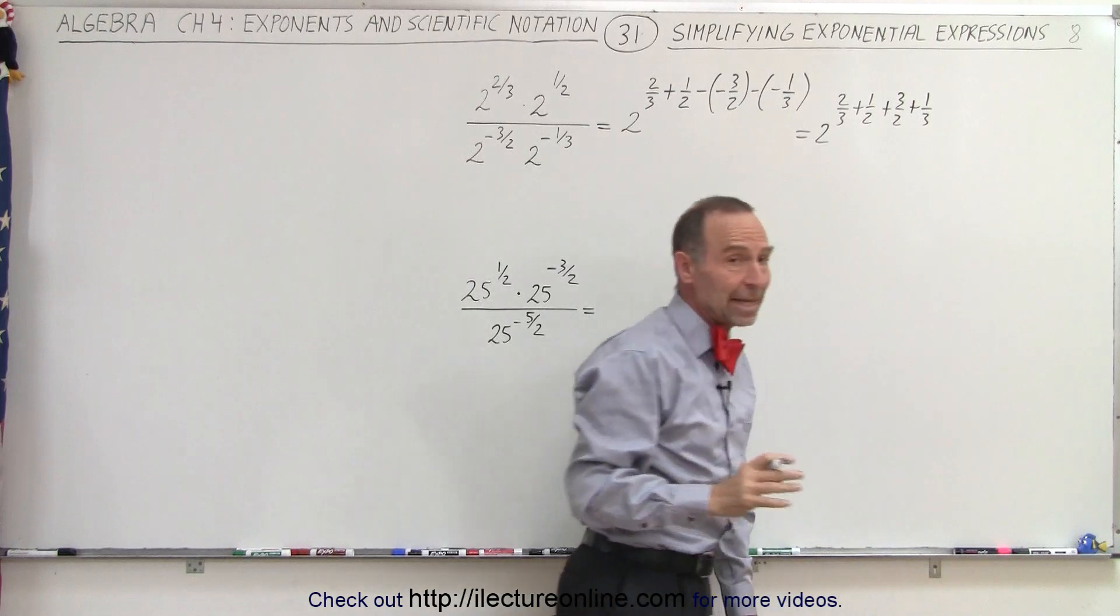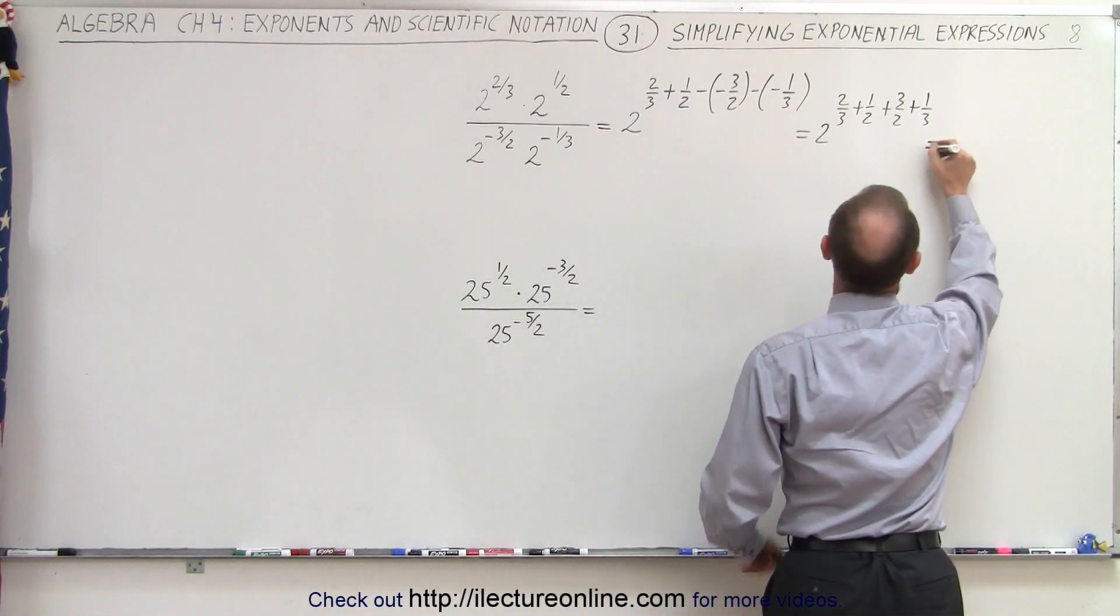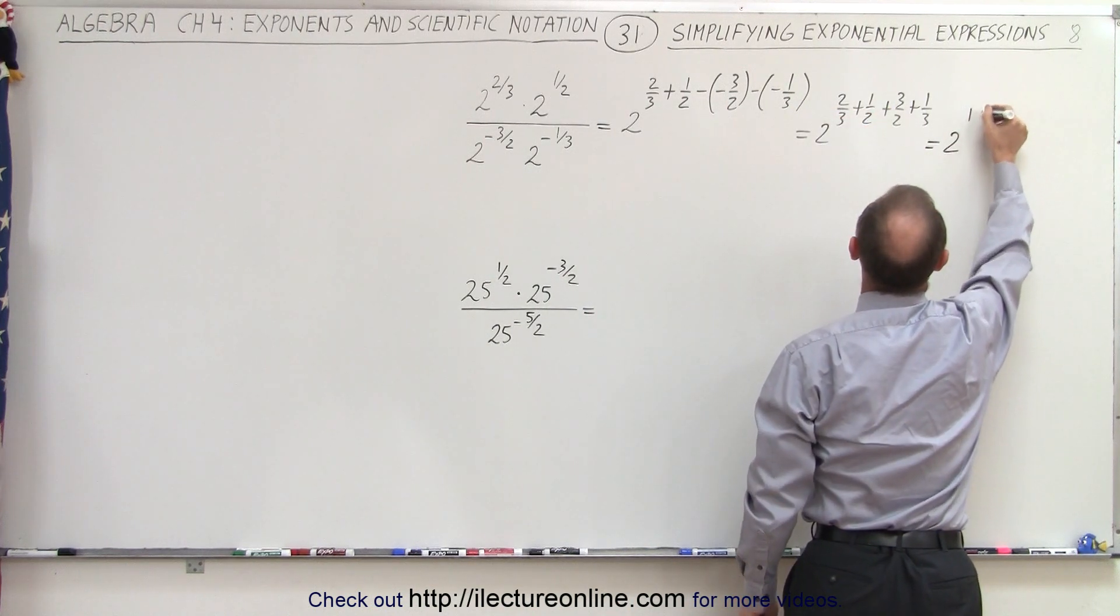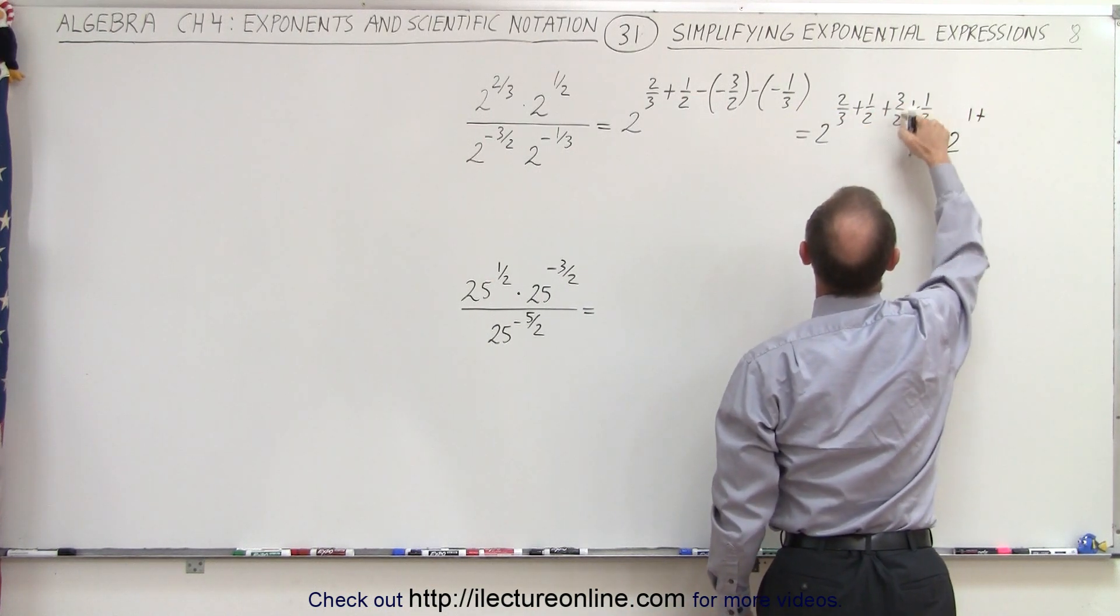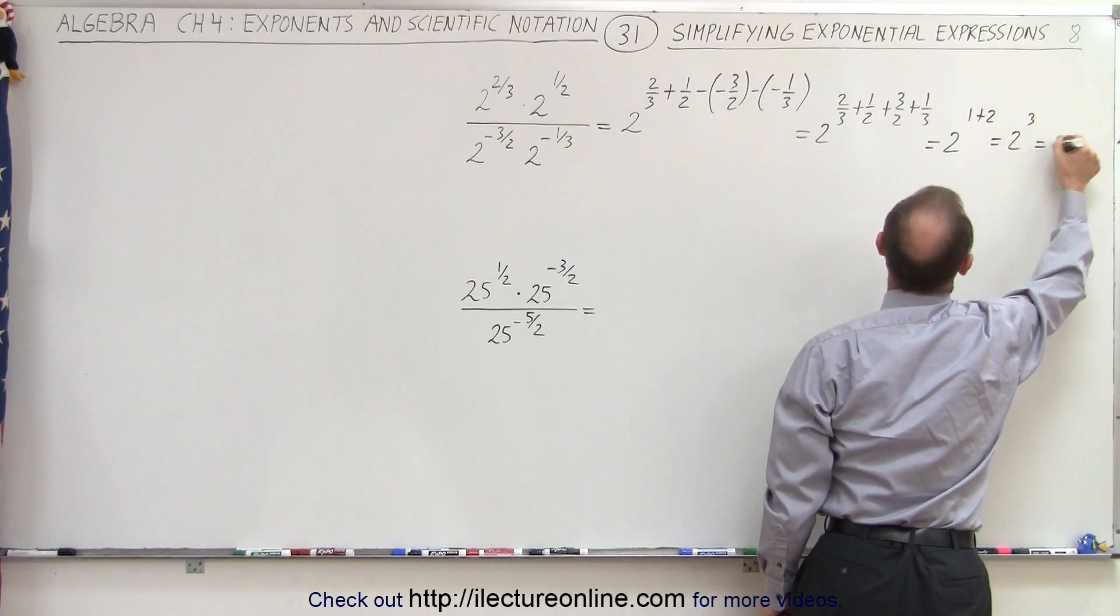And then we can add the fractions that have the same denominator. So this becomes 2 thirds plus 1 third, which is 2 to the 1st power, plus 1 half plus 3 halves, which is to the 2nd power, or 2 cubed, which is equal to 8.